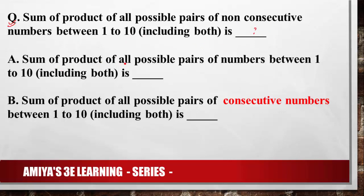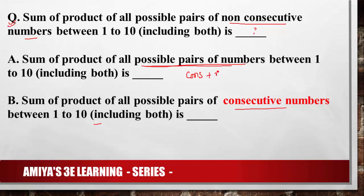Now understand the question better. We have three types: sum of product of all possible pairs of numbers between 1 to 10 (including both), sum of product of all possible pairs of non-consecutive numbers, and sum of product of all possible pairs of consecutive numbers between 1 to 10. All possible pairs means consecutive plus non-consecutive.